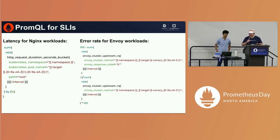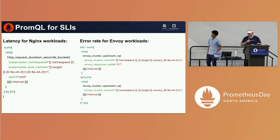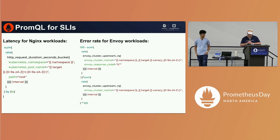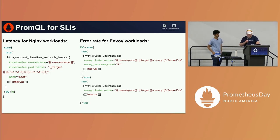On the right we have another metric for error rate — it looks a little different. It's expressed out of 100%, so we multiply by 100 after dividing the numerator by the denominator. The numerator is successful requests not in the 500 range, and the denominator is the total number of requests.